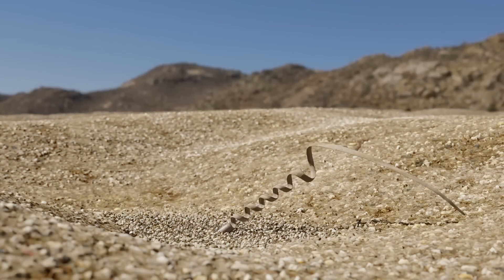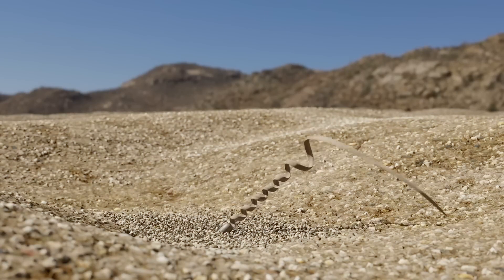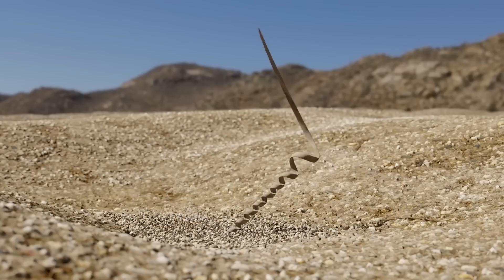The secret to its effective planting is the number of coils. Too many coils make the structure too soft, while too few reduce its thrust force. The design strikes the perfect balance, allowing the seed to be buried deep enough to be protected from natural threats like fire or animals.